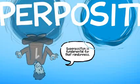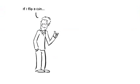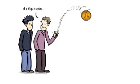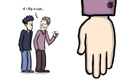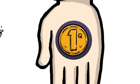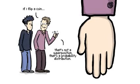So superposition is fundamental for that randomness. If I flip a coin, I don't carry coins in my pocket anymore, or I'd flip one. I flip a coin, and then I cover up the coin as soon as it lands. You don't know whether it's a heads or a tails, but it's either a heads or a tails. We just don't know yet. That's not a superposition. That's a probability distribution.